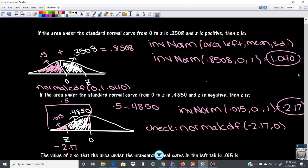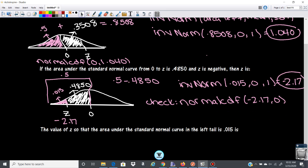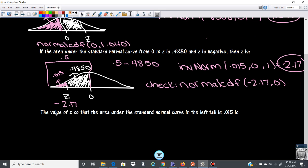All right, and then this last problem here, the value of z so that the area under the standard normal curve in the left tail is 0.015. Well, that's actually what we just did. There's 0.015, so it's negative 2.17. That's a pretty easy one.